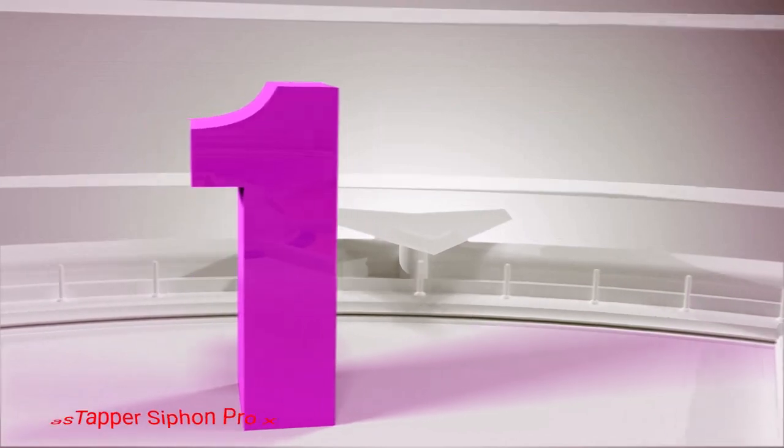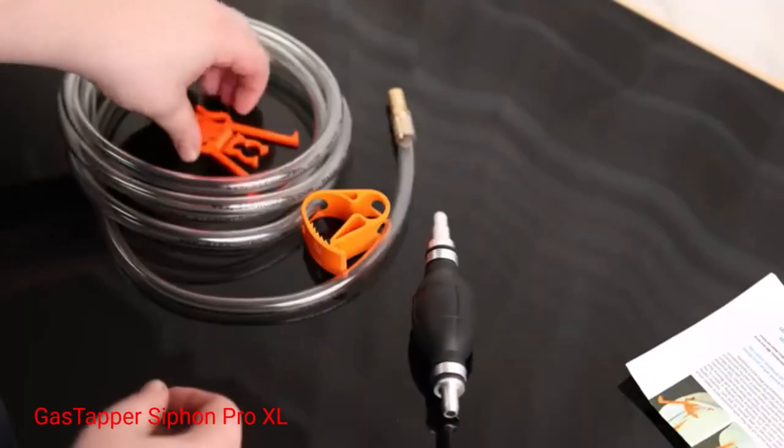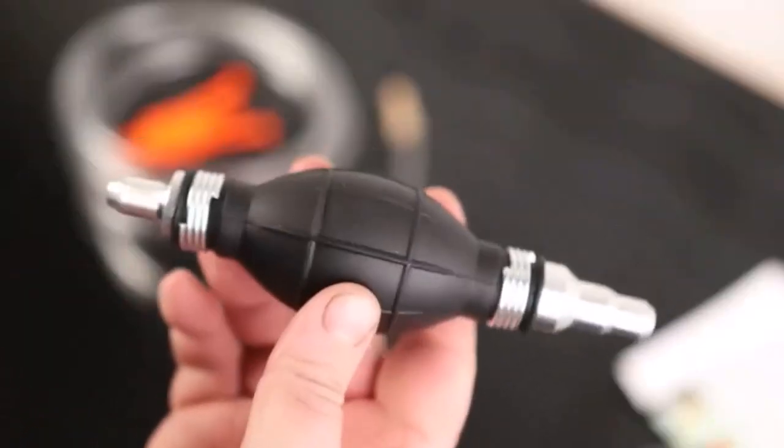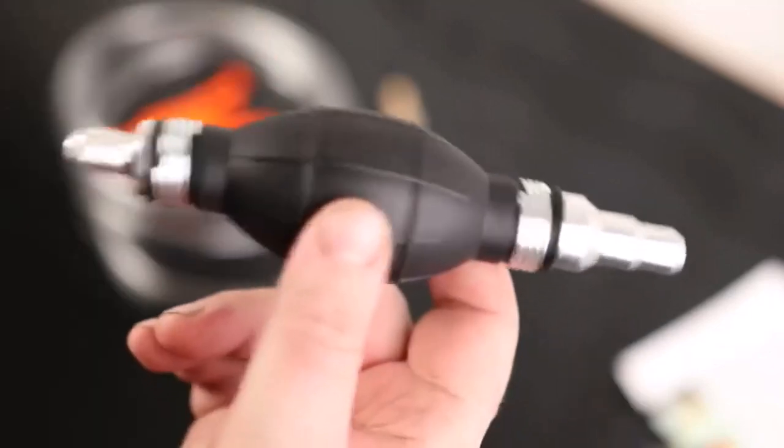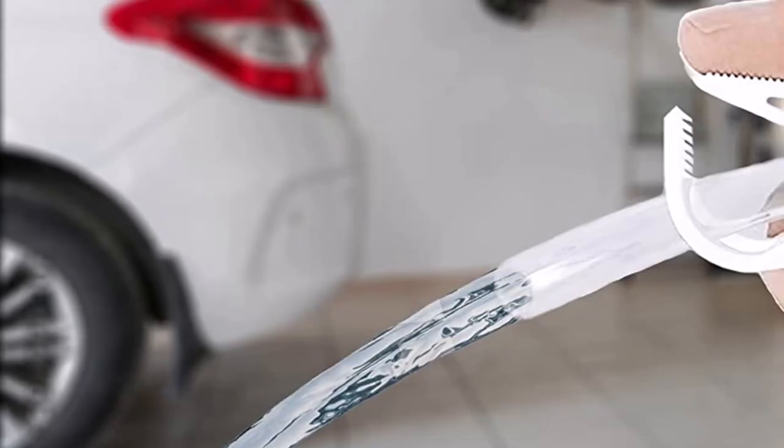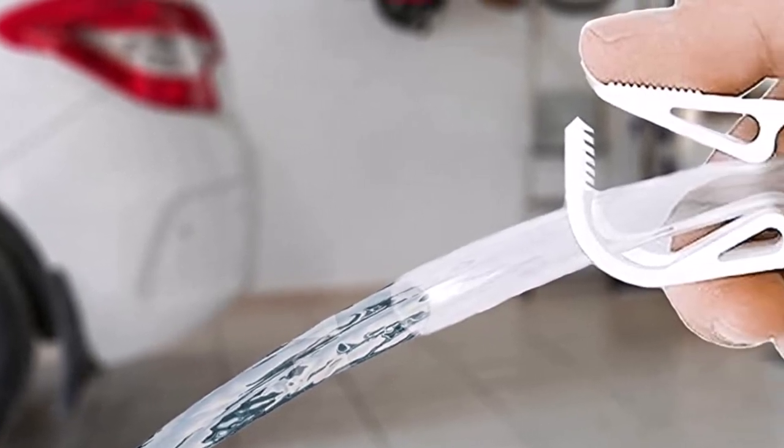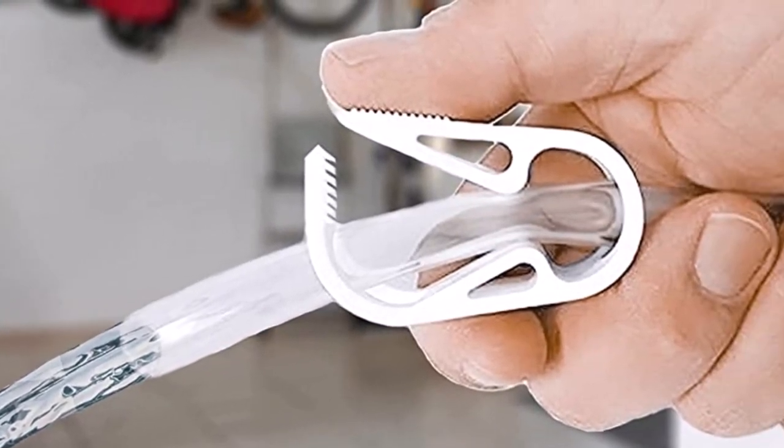Number 1. Gastapper Siphon Pro XL. One of the largest and most powerful fuel transfer pumps on our list is from Gastapper. This is a robust and large fuel siphon that pumps up to 4 gallons per minute and includes a lengthy anti-kink hose for easier access.